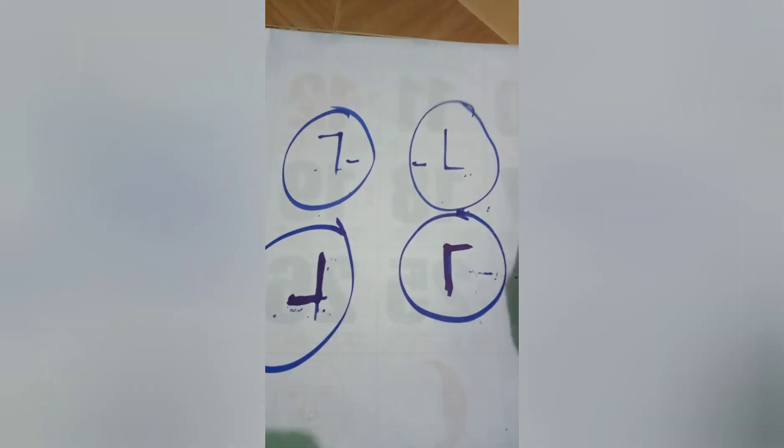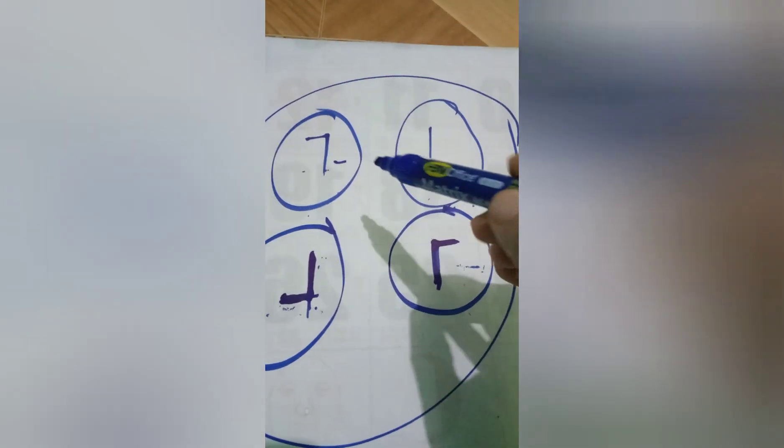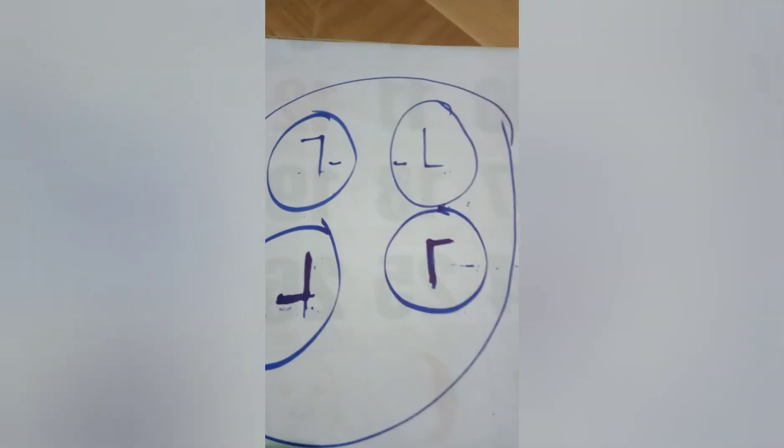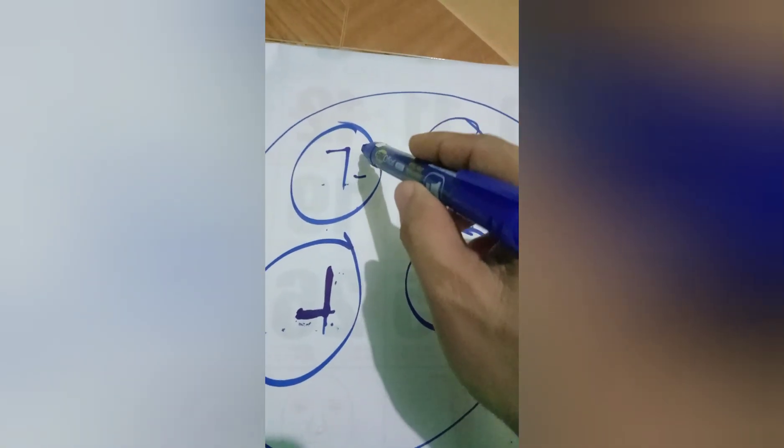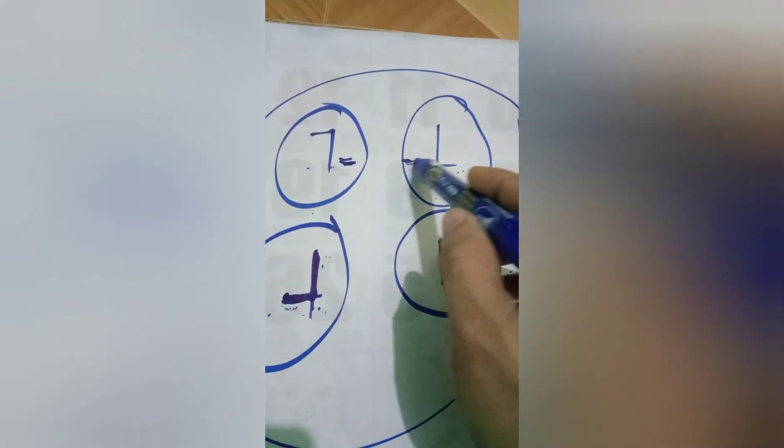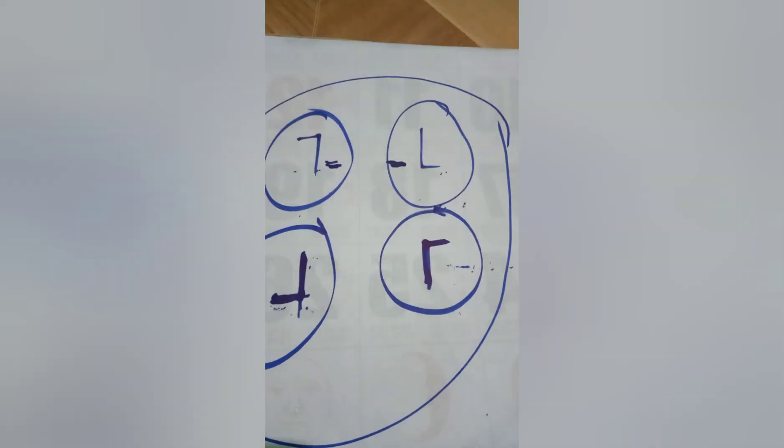Bakit natin isinishare itong dalawang markings na ito? Kasi nga, mayroon silang iba't ibang meaning or kahulugan. Itong 7 ay malinaw na 3 short deposit po ito. Saka ito namang L ay, ito po ay malubhang marka or delikadong marka.